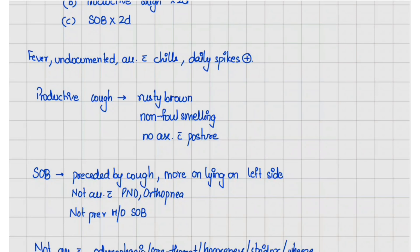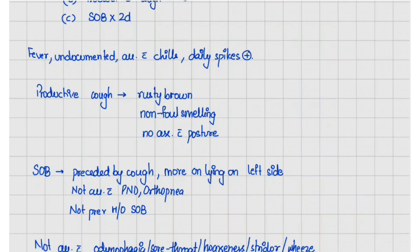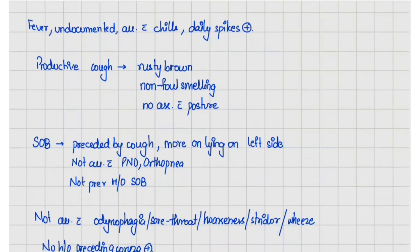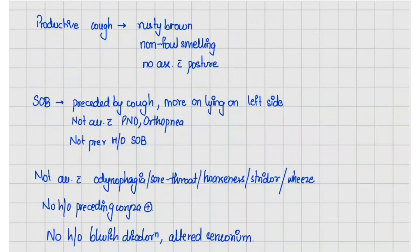The sputum is non-foul smelling and the amount of sputum does not vary with posture. The shortness of breath was preceded by cough and is more on lying on the left side. There is no association with paroxysmal nocturnal dyspnea or orthopnea, and no previous history of such shortness of breath.